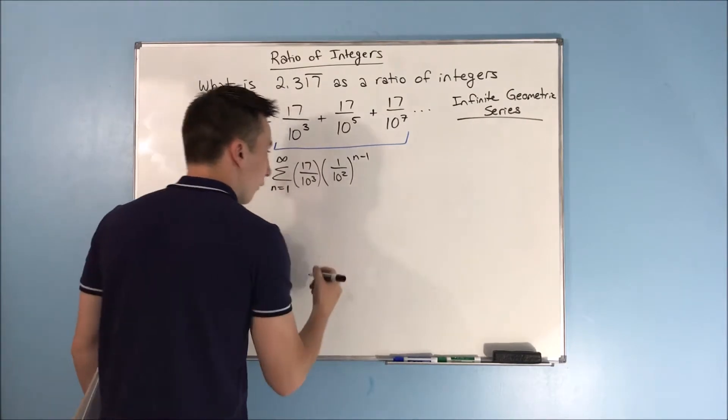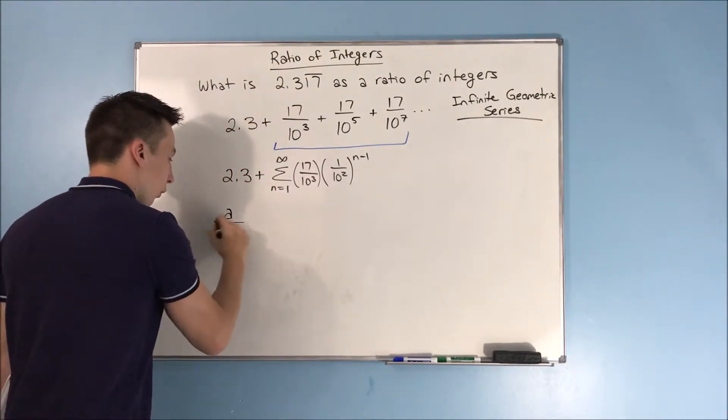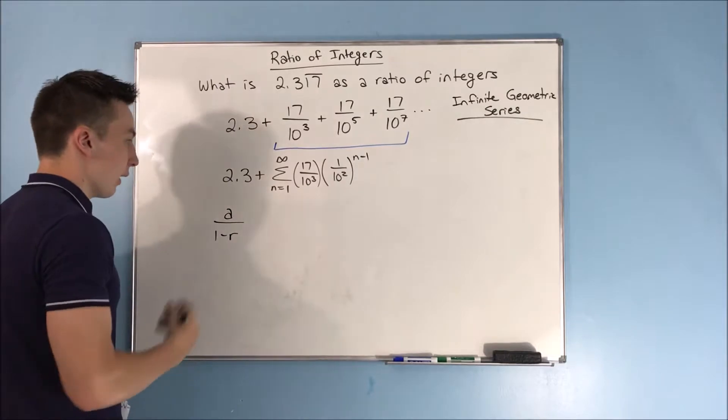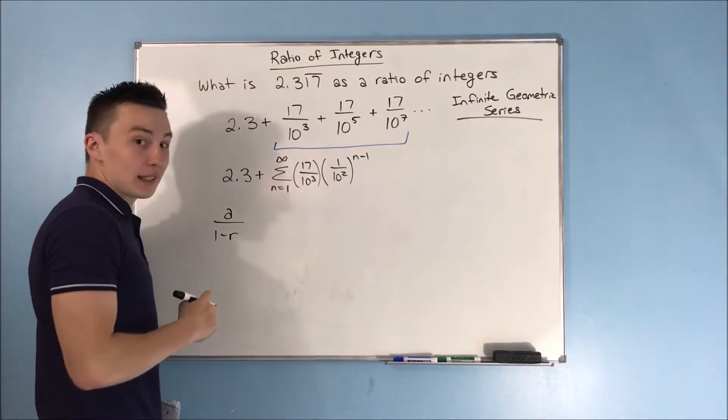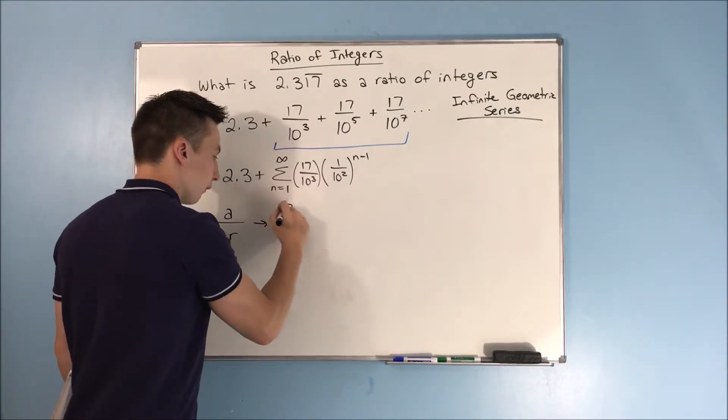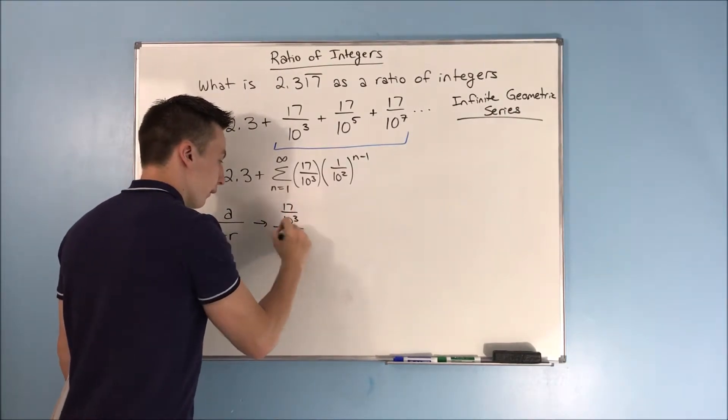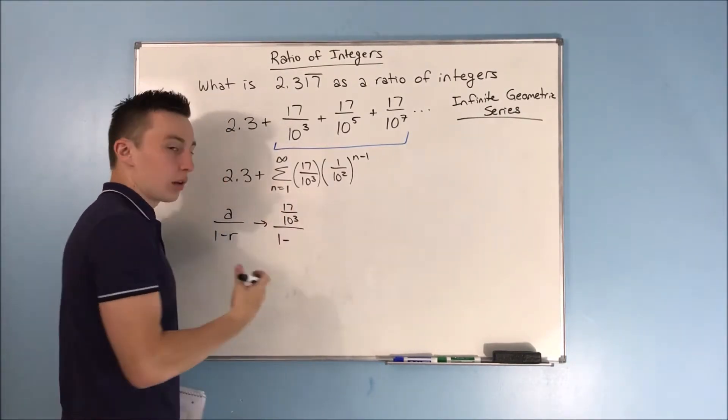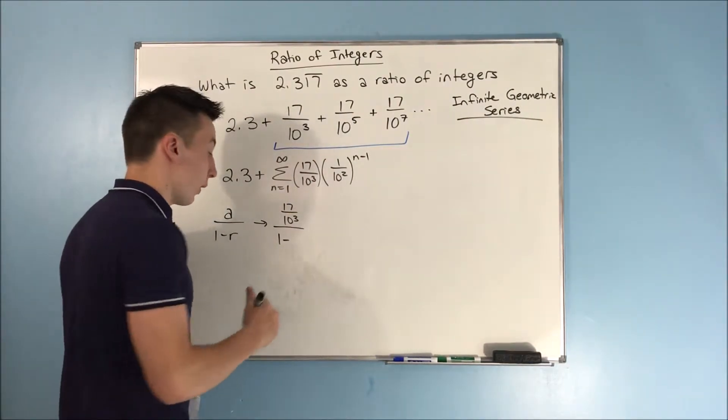So how do we find the sum? Well we have to use a over 1 minus r. What's our a? We already said that's 17 over 10³, and then we have 1 minus our r, our common ratio, that's 1 over 10².